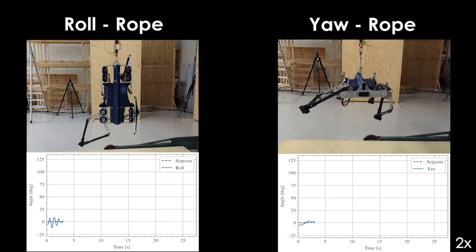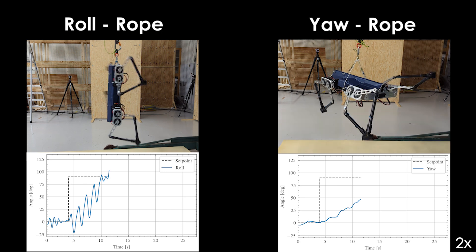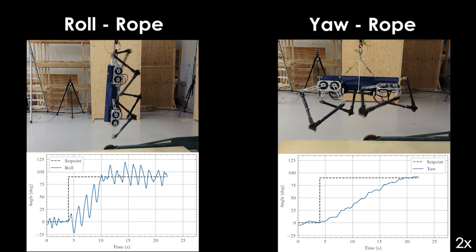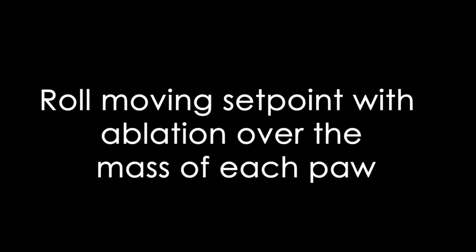Further testing involved roll and yaw evaluations with the platform suspended from a rope while giving a 90-degree step command in robot attitude. Actuation speeds were reduced to minimize rope-induced oscillations and disturbances introduced by the rope.